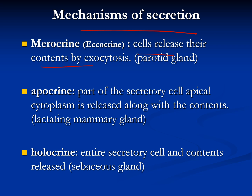Another classification is based on the mechanism of secretion. If the cell releases its contents by exocytosis without any loss of cytoplasm or plasma membrane, we call it merocrine or eccrine. If there is loss of the apical portion of the cytoplasm along with the plasma membrane, we call this gland apocrine — the apical portion pinches off and is released as the product.